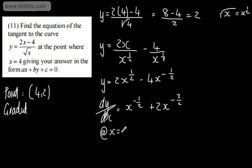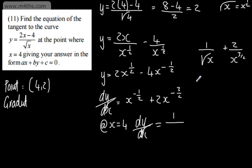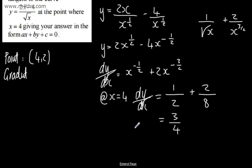At x = 4, I prefer to rewrite the derivative as 1 over root x plus 2 over x to the power of 3 over 2. Substituting in: 1 over the square root of 4 gives a half, plus 2 over 4 to the power of 3 over 2. Taking the square root of 4 gives 2, cubing gives 8, so 2 over 8 is a quarter. So dy by dx equals a half plus a quarter, which gives 3 quarters. So we have the point (4, 2) and gradient 3 over 4.